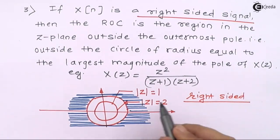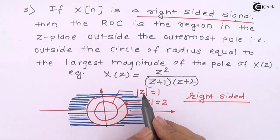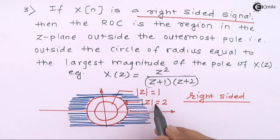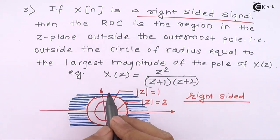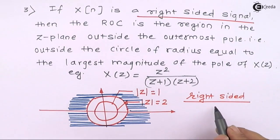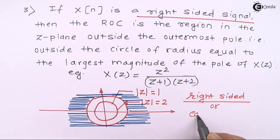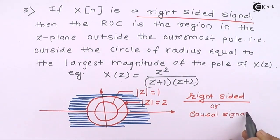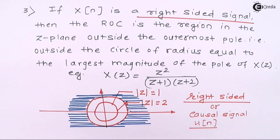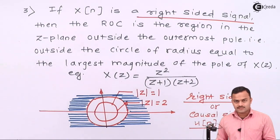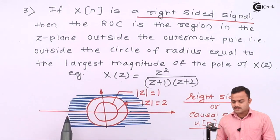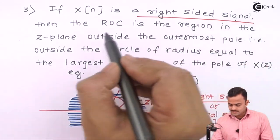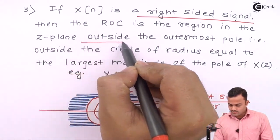Even if there is another circle present but its radius is less than 2, the ROC will still be outside the outermost circle, and the signal will be right-sided — or we can say the signal is a causal signal. This means x(n) will contain the term u(n). So for a right-sided signal, the ROC is outside the outermost pole.